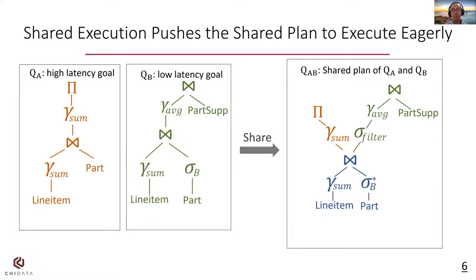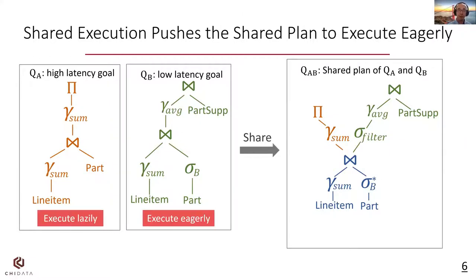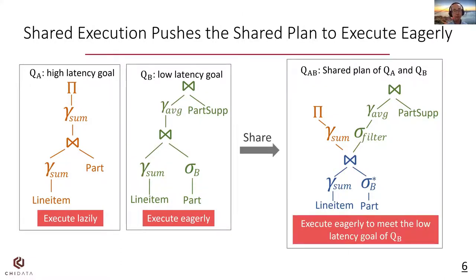Consider this example with QA and QB. They have two similar join plans with only a predicate Sigma B different. Note that for the shared plan, predicate Sigma B* does not discard tuples but annotates tuples that belong to QB. It is the Sigma filtering doing the actual filtering job for QB. If we execute the two queries separately, QA is executed lazily due to its high latency goal, and QB does the opposite. If we share the two queries, we will execute the whole plan eagerly to meet the lower latency goal of QB.